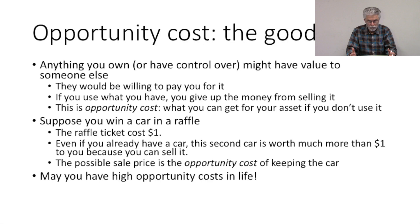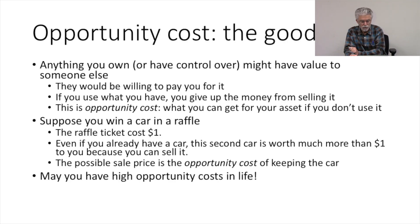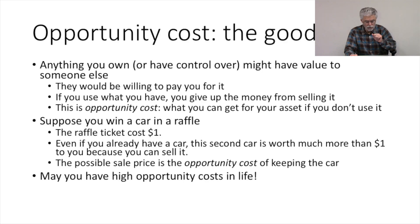So everything you own, or everything you have control over, might have value to somebody else. And so they might be willing to pay you for this asset that you own. And so if you use something that you own, you have to give up the money you would have had from selling it. This cost that you're paying for using something you own rather than selling it is called opportunity cost — it's what you can get for your asset if you don't use it, but instead sell it to somebody else.